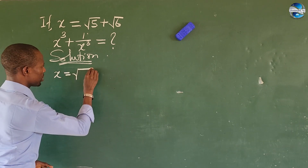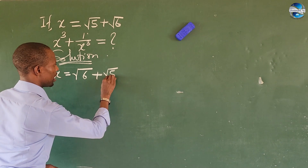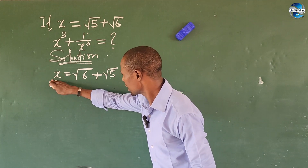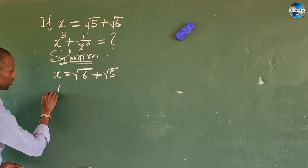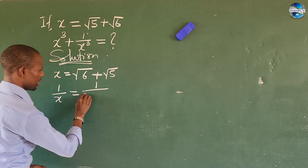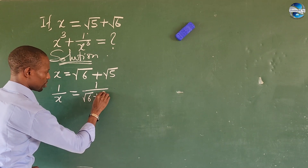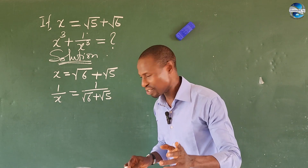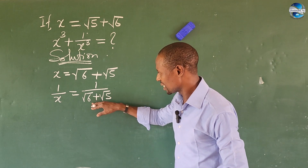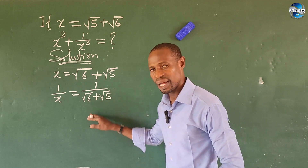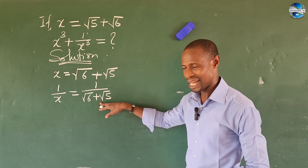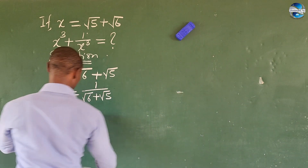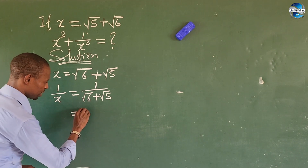The first thing I'm going to do is find the reciprocal of both sides, so we have 1 over x is equal to 1 over the square root of 6 plus the square root of 5. Now, according to elementary algebra, I want to rationalize this denominator. To rationalize the denominator, I will multiply by the conjugate of the denominator. The conjugate of the denominator will be root 6 minus root 5.